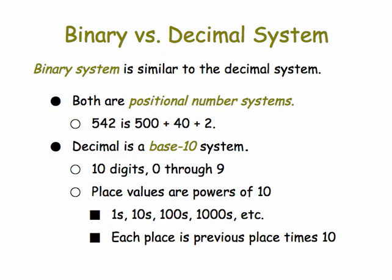The decimal system is a base 10 system. It has 10 digits, 0 through 9. And the place values are all powers of 10. There's the 1's place, the 10's place, the 100's place. And each place value is the previous place value times 10.